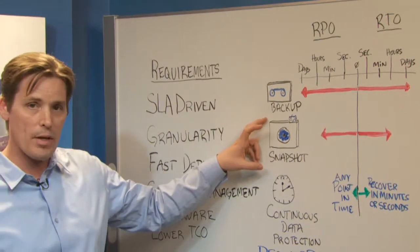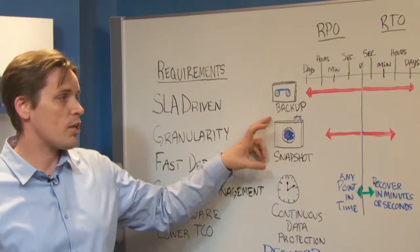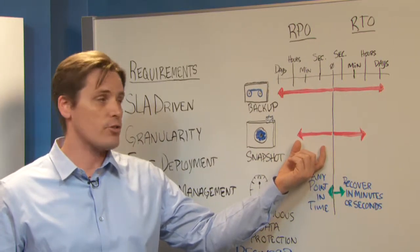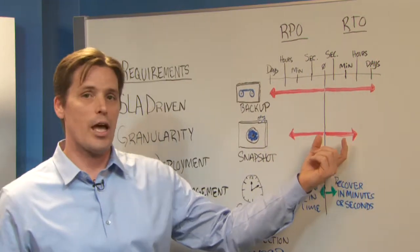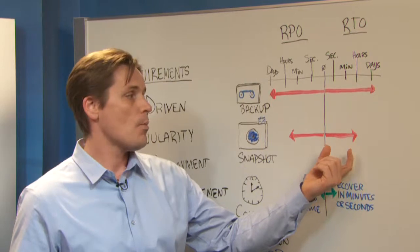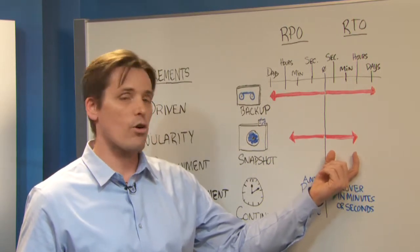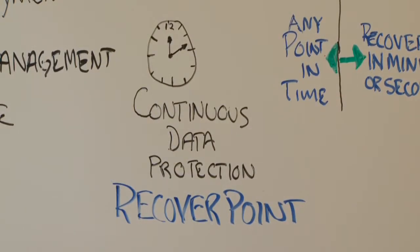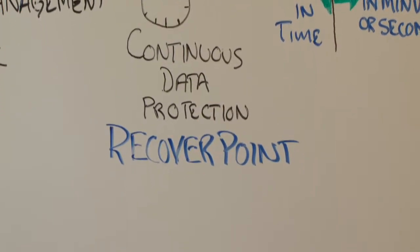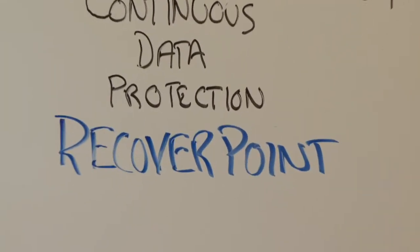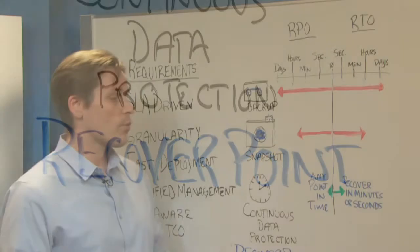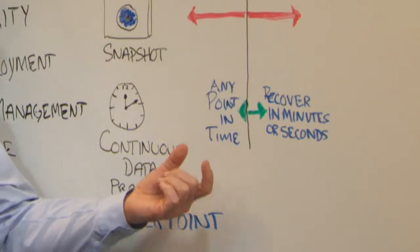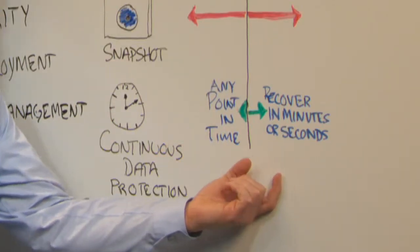Many organizations have begun using snapshots, which give you a shorter Recovery Point Objective, usually a couple of hours, and a shorter Recovery Time Objective, but once again, this is usually an hour or more. For many organizations, there's a need for continuous data protection. EMC provides RecoverPoint to allow for recovery to any point in time and recovery in a matter of minutes or even seconds.